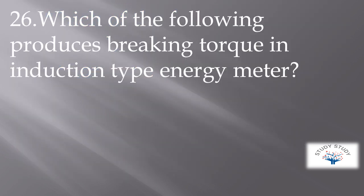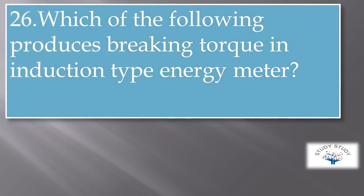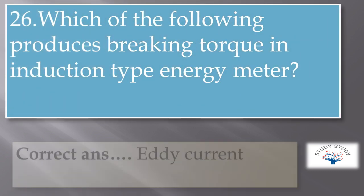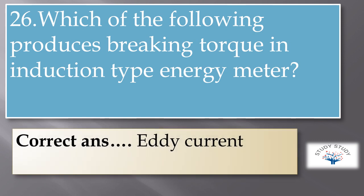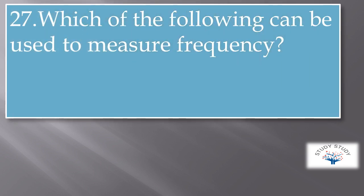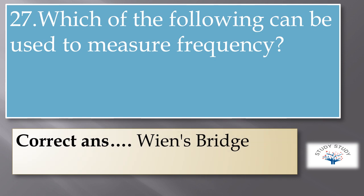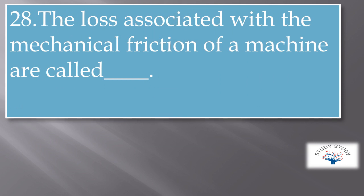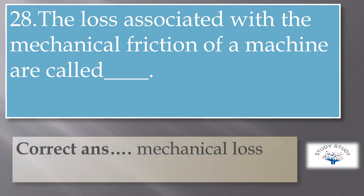Which of the following produces braking torque in an induction type energy meter? The correct answer is eddy current. Which of the following can be used to measure frequency? The correct answer is Wien's bridge. Wien's bridge is used to measure frequency. The losses associated with mechanical friction of a machine are called mechanical losses.